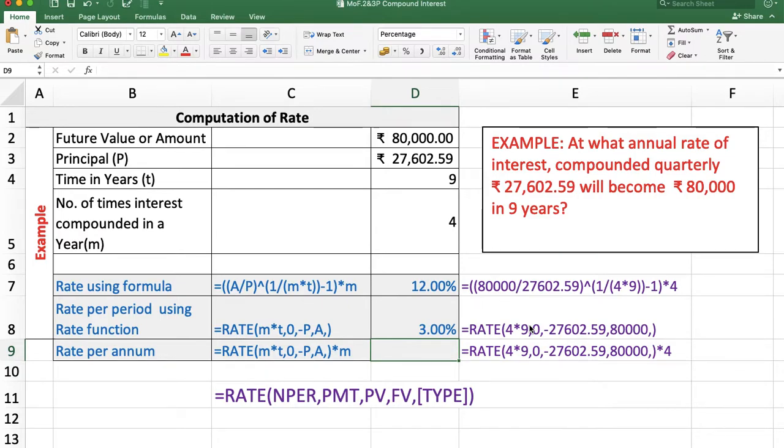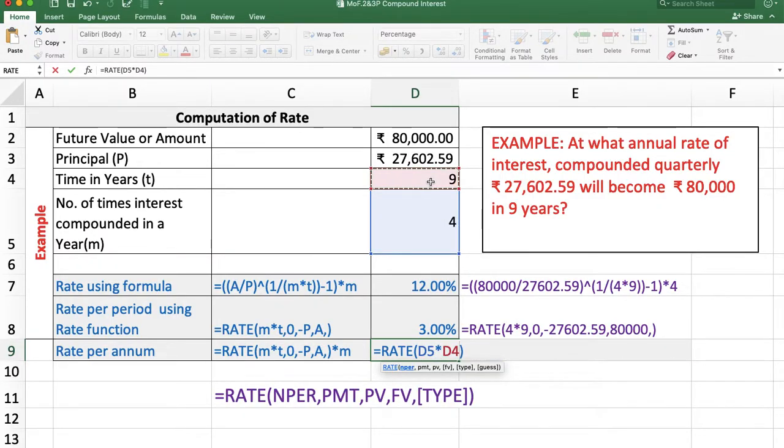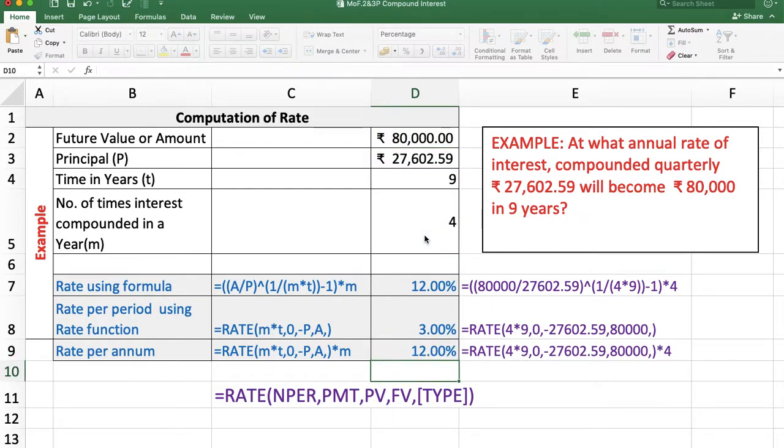To get the annual rate, we multiply by 4 to get 12%. Or we can use the formula and function in combination: =RATE(M*T, 0, -PresentValue, Amount) * M, and we get the same answer, 12%.